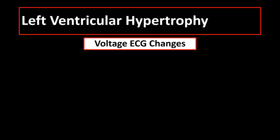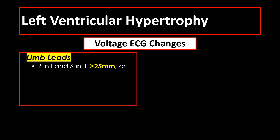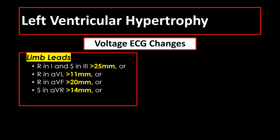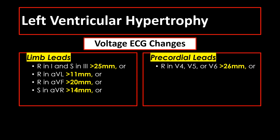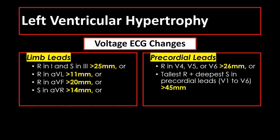There are also voltage ECG changes indicative of left ventricular hypertrophy. In the limb leads: R wave in lead 1 plus S wave in lead 3 is more than 25 mm; or R wave in AVL is more than 11 mm; or R wave in AVF is more than 20 mm; or S wave in AVR is more than 14 mm. In the chest leads: R wave in V4, V5, or V6 is more than 26 mm; or tallest R wave plus deepest S wave in the precordial leads is more than 45 mm.